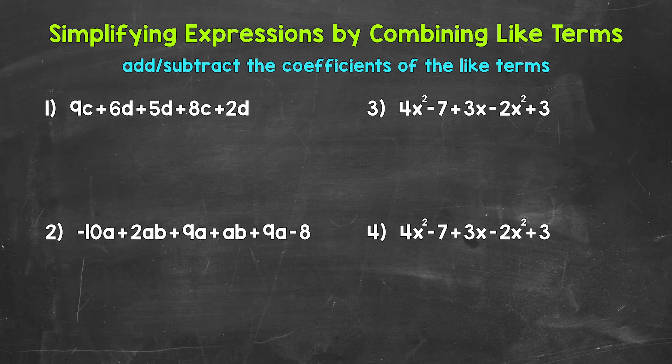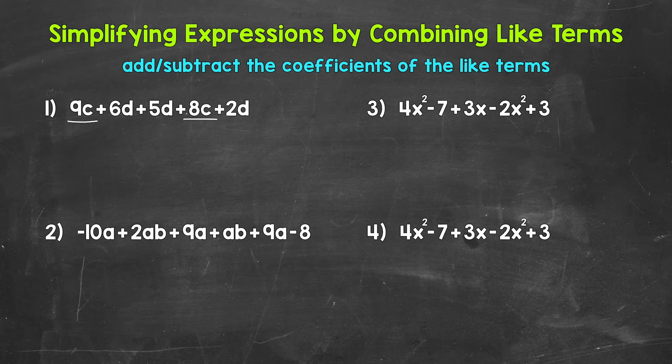Let's jump into number one where we have 9c plus 6d plus 5d plus 8c plus 2d. The first thing we need to do is identify any like terms that we can combine. We have 9c and 8c — both of those terms have the same variable to the same power, the variable c to the understood power of 1, so they are like terms.